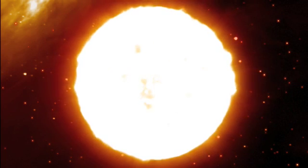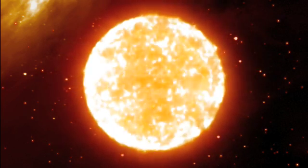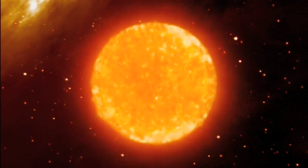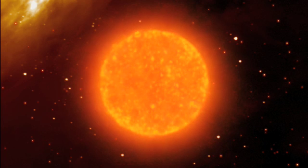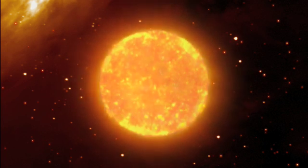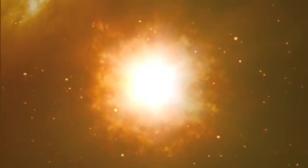Stellar mass black holes are formed when stars 20 or more times the size of our own Sun finally run out of fuel in their cores. They rapidly cool and collapse. And the shockwave from the collapse blows the outer layers of the stars to bits in a colossal explosion called a supernova.